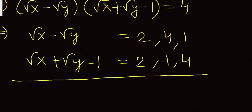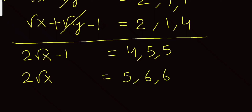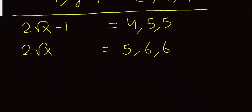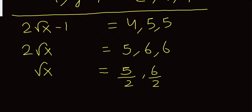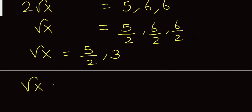Adding the two equations in a pair, the √y terms cancel and we get: 2√x − 1 = 4 or 5 (depending on the pair). Further simplification gives 2√x equals five or six, so √x equals five-halves or three. Since we want an integer solution, we discard the fraction and take √x = 3, therefore x = 9.